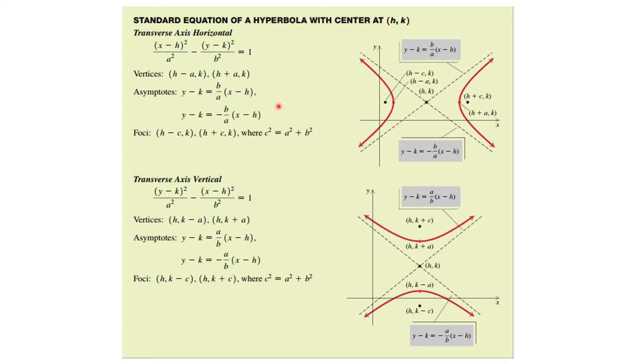We also could think about, we can move the center away from 0, 0 and move it to h, k. Now notice that we're still having the transverse axis parallel to the x axis or parallel to the y axis and we get these results. So whenever we have a transverse axis horizontal, it is x minus h whole squared over a squared minus y minus k whole squared over b squared equals 1. Again, this is centered at h, k. And c squared still equals a squared plus b squared.